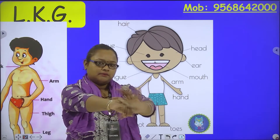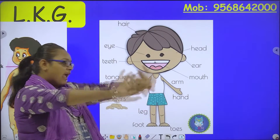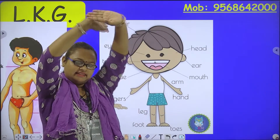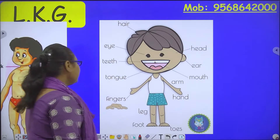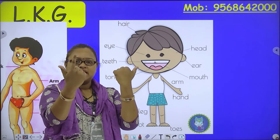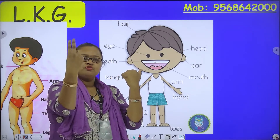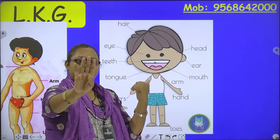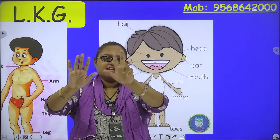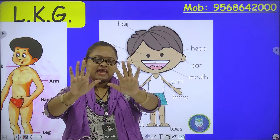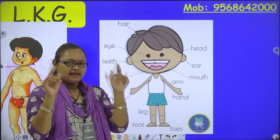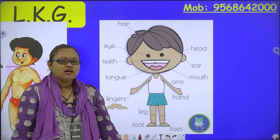Then arm. Then hand. Raise your hands everyone, like this. Then these are your fingers. How many fingers do we have? 1, 2, 3, 4, 5, 6, 7, 8, 9, 10. How many fingers? Ten. Ten fingers on the hands and ten fingers on the toes.